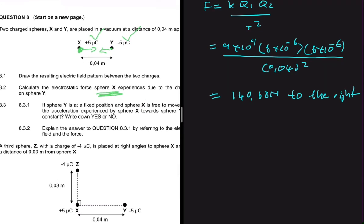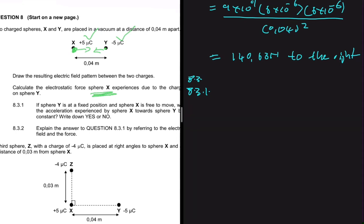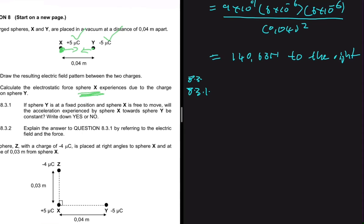Let's move to 8.3. So 8.3.1 says that if sphere Y is at a fixed position and sphere X is free to move, will the acceleration experienced by sphere X towards sphere Y be constant? So no, obviously it's not going to be constant. There's no way it can be constant. And then 8.3.2, we now have to explain why we say no.